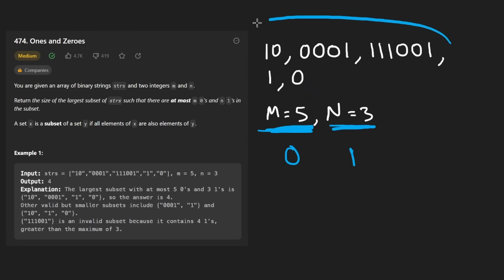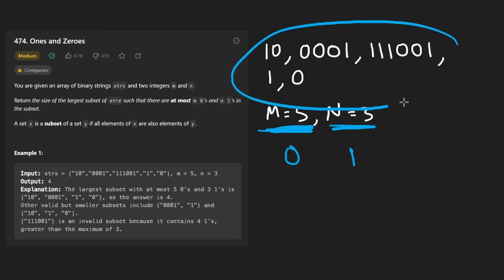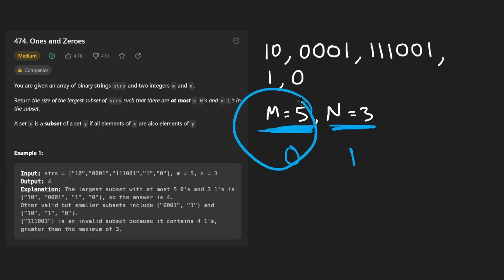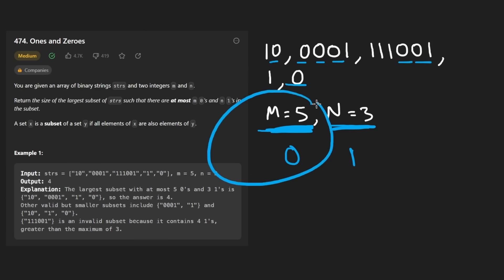So the first thing you might consider is: can we just take all five of these strings? Well, how many zeros would we get in that case? We'd get one, two, three, four, five, six, seven — that's too many zeros.